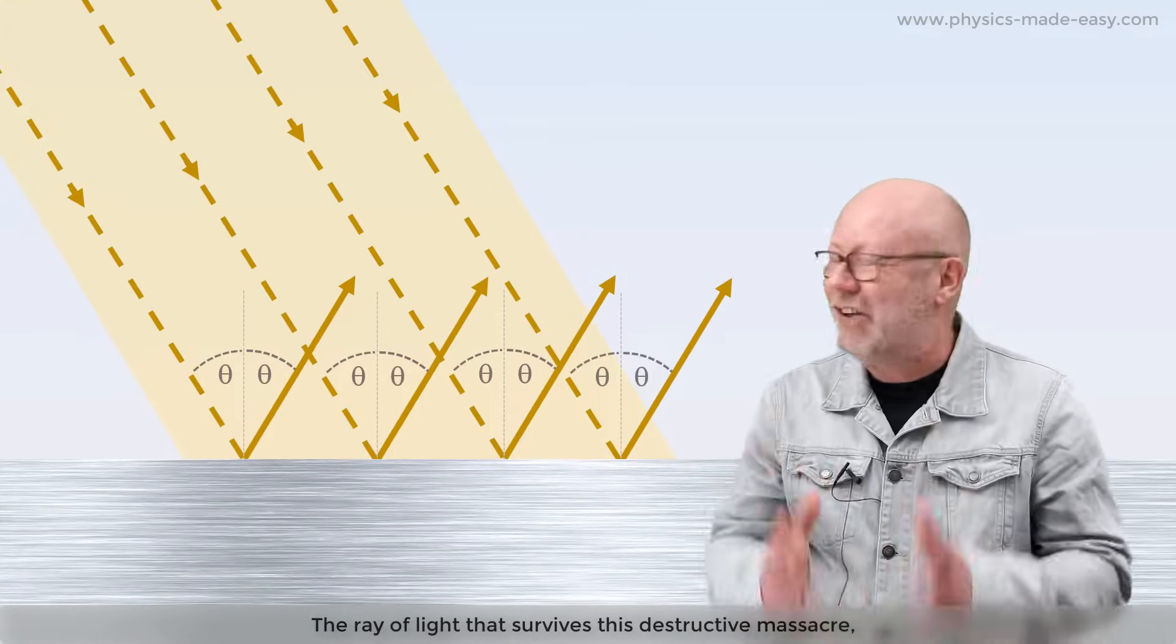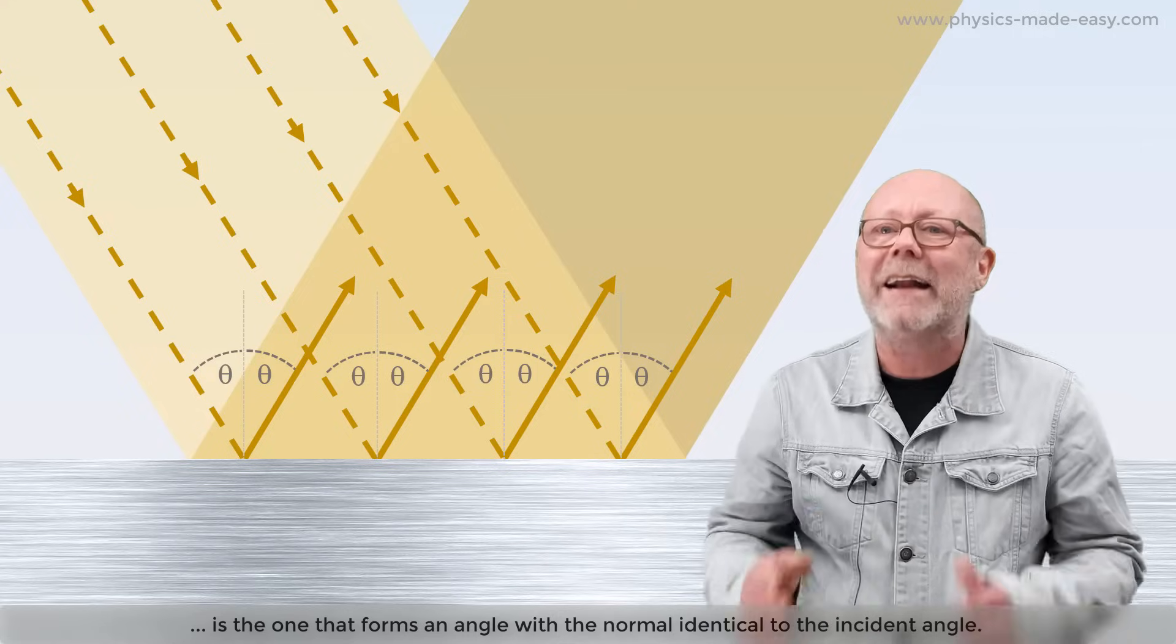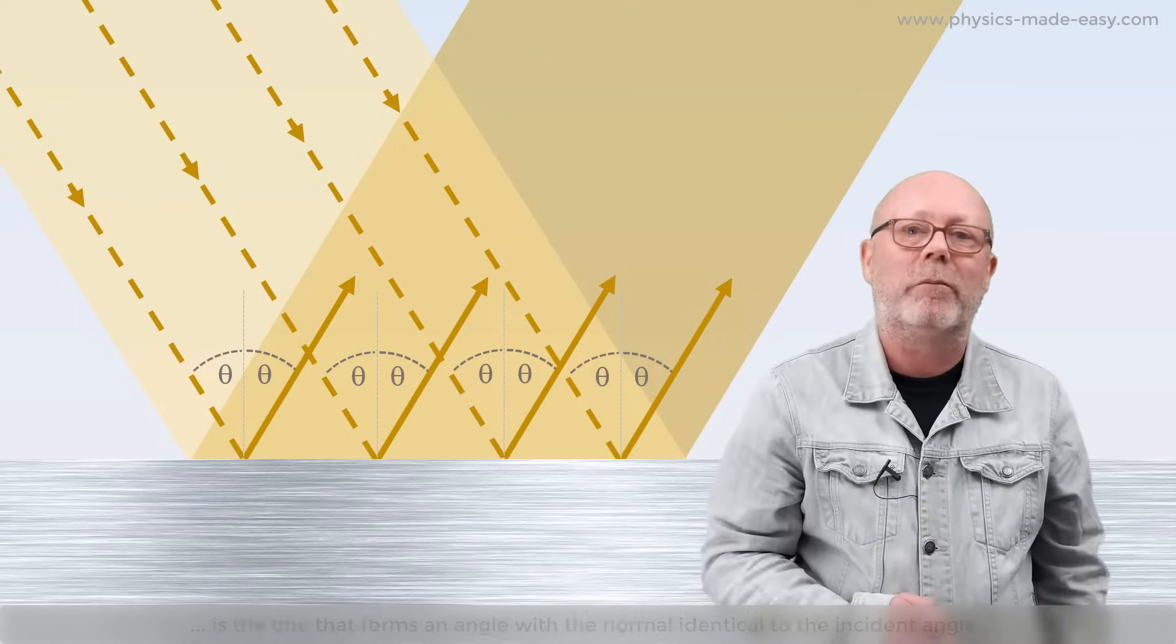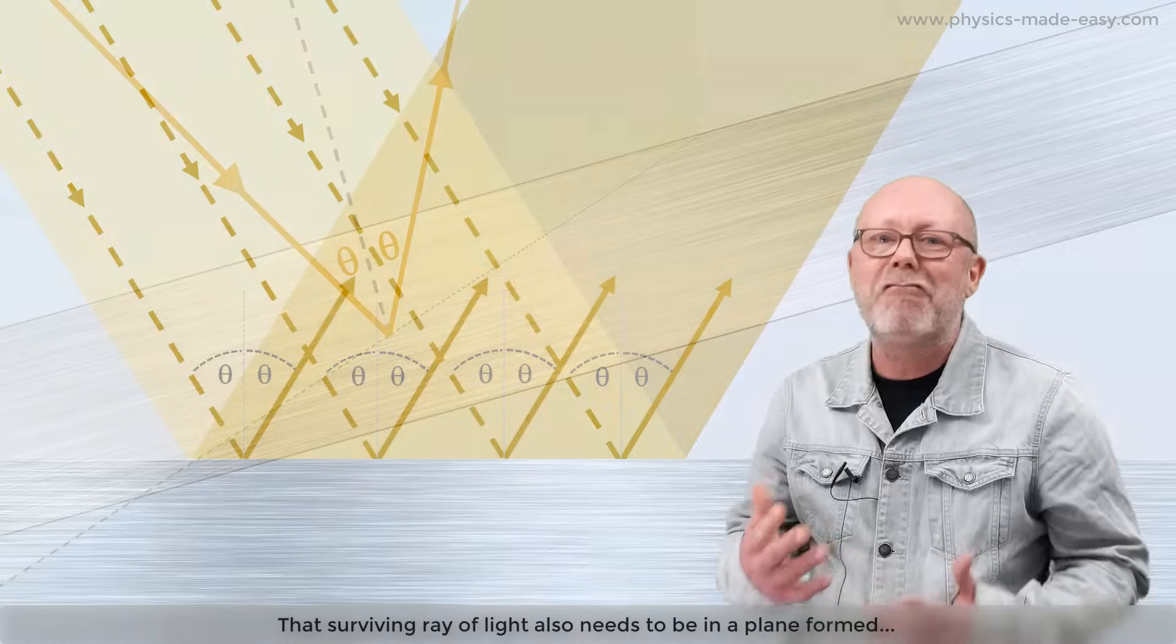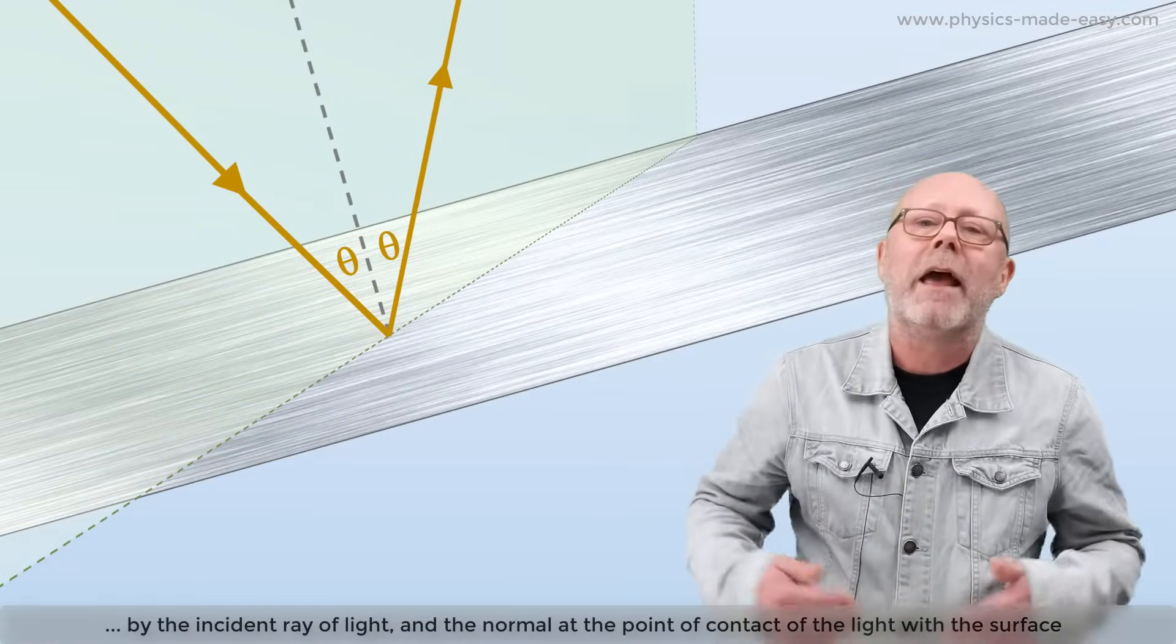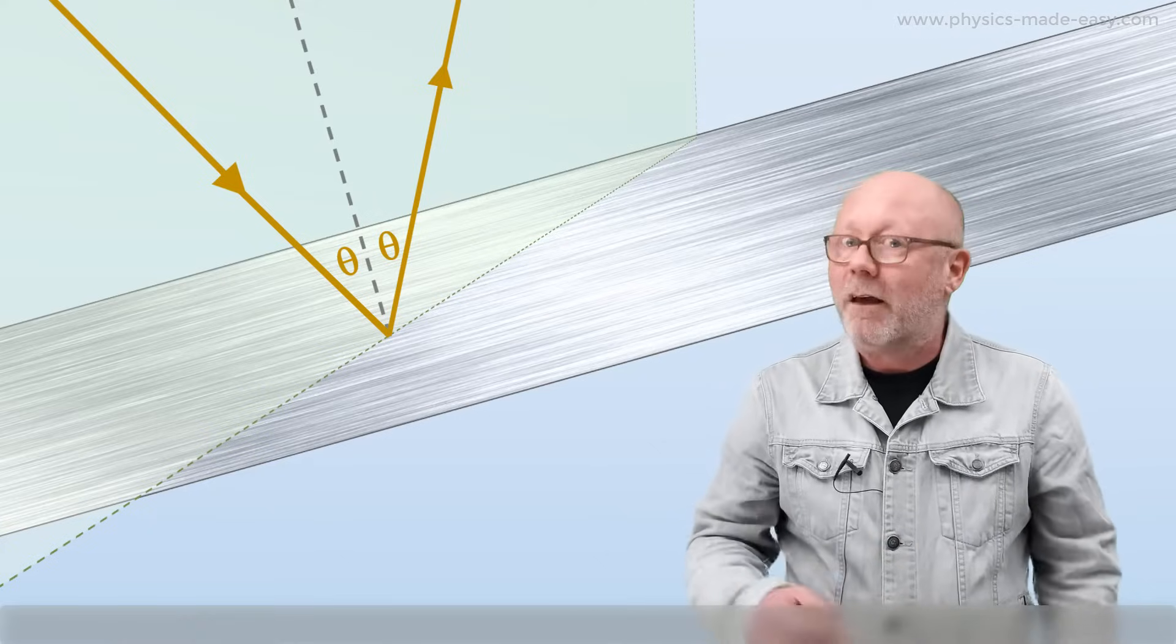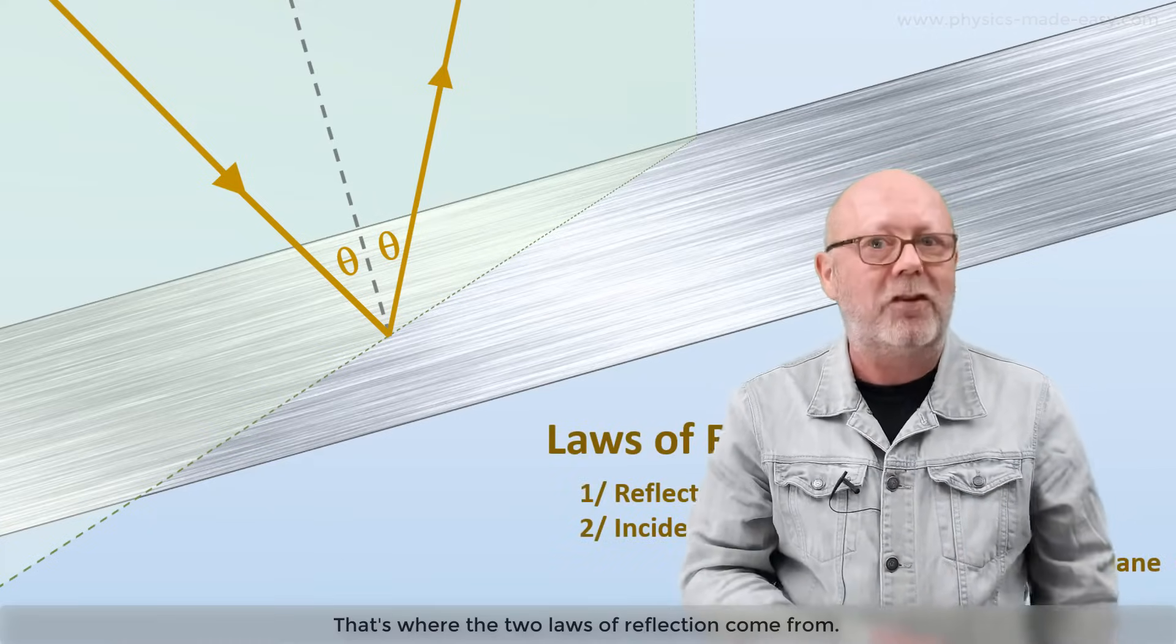The ray of light that survives this destructive massacre is the one that forms an angle with the normal identical to the incident angle. That surviving ray of light also needs to be in a plane formed by the incident ray of light and the normal at the point of contact of the light with the surface. That's where the two laws of reflection come from.